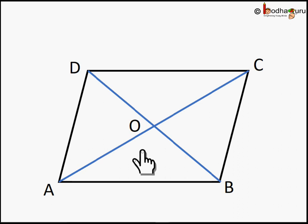Now let us look at triangle ABO and triangle DOC. AO is equal to OC and BO is equal to OD. This is given—the diagonals bisect each other.